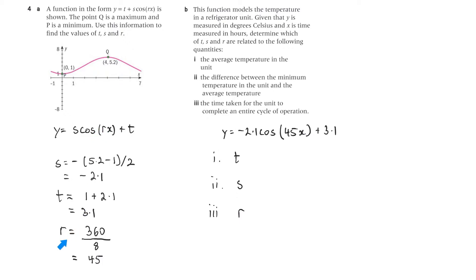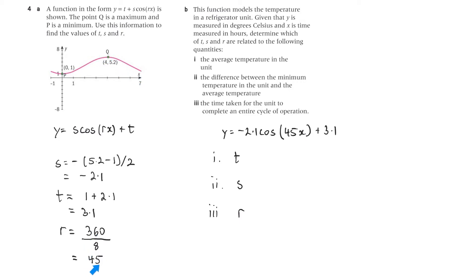r is our b, and we know that b equals 360 divided by the period. To work out the period: we can see that this is half a period up to 4, so the full period must be 8. So 360 divided by 8 is 45, therefore r equals 45.